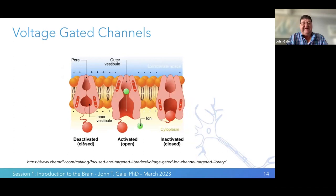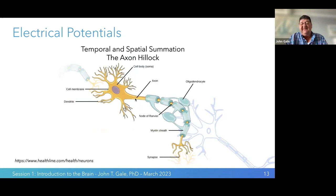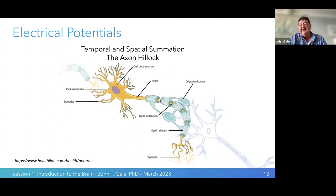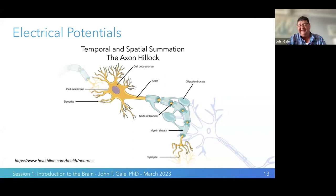Voltage-gated channels are located all along the cell but at very high densities at the axon hillock and at the nodes of Ranvier — membrane segments between areas of myelination, the fat surrounding the axon. This fat acts like an insulator around a wire. Action potentials move quite fast along the membrane, but when they hit this insulator, they jump very quickly between the nodes down the length of the neuron. This process of jumping from node to node is called saltatory conduction. The larger the diameter of the axon and the more myelination a neuron has, the faster the action potential moves, and the nervous system has designed itself to utilize these different speeds for various functions.